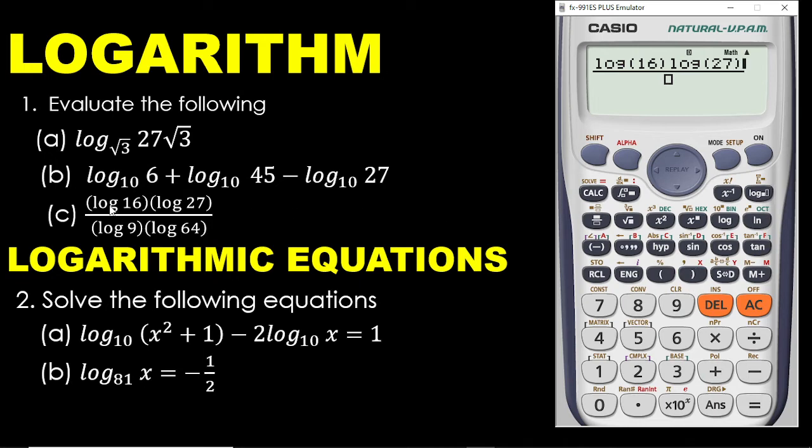Look at this carefully. This log comes with no base, which means this one is in base 10. Now, I am done with the top one. So I move the cursor down. And I enter the bottom one. I have log 9. So log 9, bracket must be closed. Then the next one is log 64. So log 64. You close your bracket. And then equal sign. Bam. That is 1. So that is so easy when you are working with logarithm.